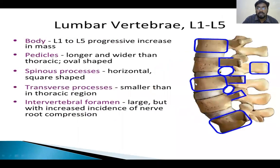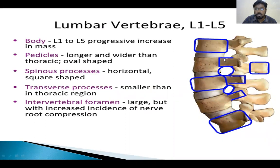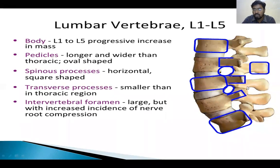Coming to the lumbar vertebra: the size of the lumbar vertebra increases from L1 to L5. These are the intervertebral discs and this is the intervertebral foramen. The pedicle is broad and stout in the lumbar region. The spinous processes are usually slab-shaped. These are the facet joints, also called synovial joints or zygapophysial joints.